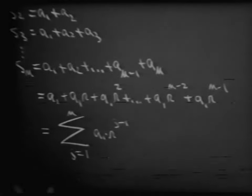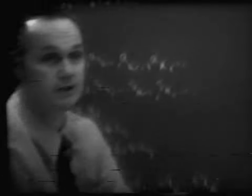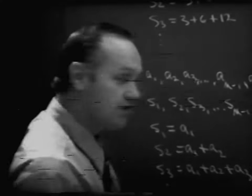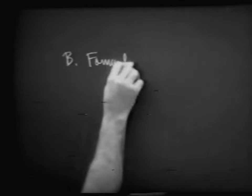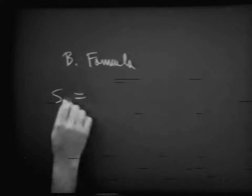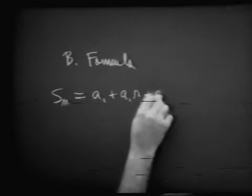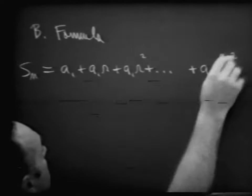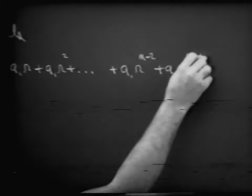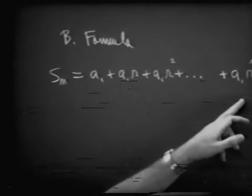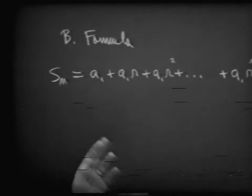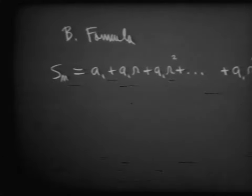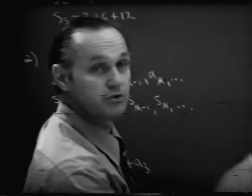Let's develop a formula for a geometric series — just as we did for the arithmetic series — that gives us the sum of the first n terms without adding them all up. We write S sub n as A sub 1 plus A sub 1 R plus A sub 1 R squared, and so on, up to A sub 1 times R to the n-2, then A sub 1 times R to the n-1.